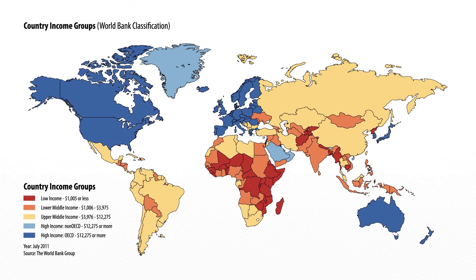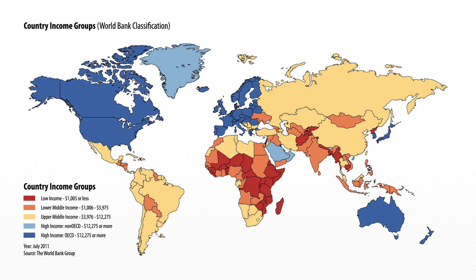The World Bank categories provide a useful map of the world. The areas shaded blue on the map are the high-income countries: the U.S. and Canada, Western Europe, Japan and Korea, Australia and New Zealand, and a few other parts of the world. Adding up the population of that high-income group, you find it's about 1 billion of the roughly 7 billion people on the planet — roughly 15% of the world's population.